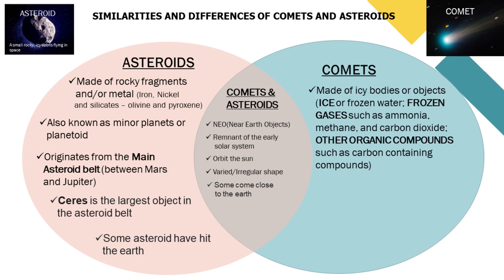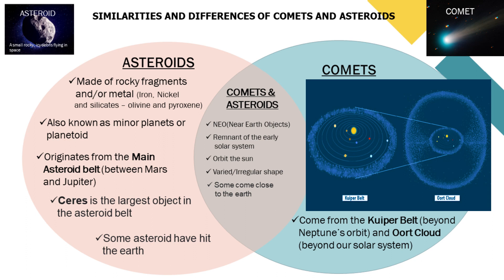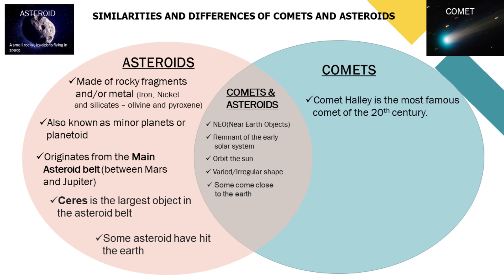Comets, on the other hand, are made of icy bodies or objects such as ice or frozen water, frozen gases such as ammonia, methane, and carbon dioxide, and other organic compounds such as carbon-containing compounds. Comets are sometimes referred to as dirty snowballs. They tend to have very extended and elongated orbits, or highly elliptical orbits. Comets usually come from the Kuiper Belt, which is beyond Neptune's orbit, and from the Oort Cloud, which is beyond our solar system.